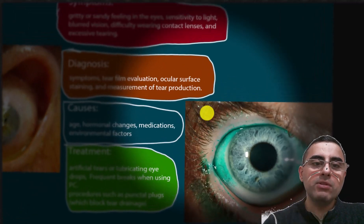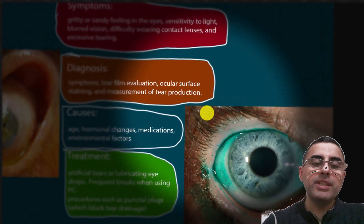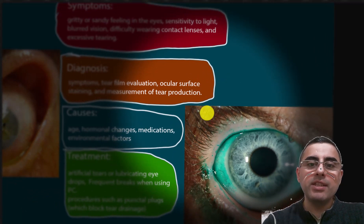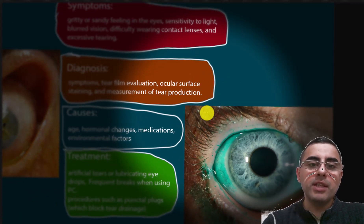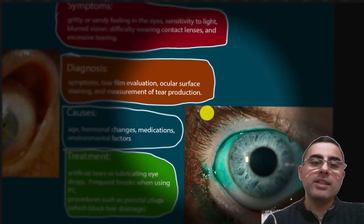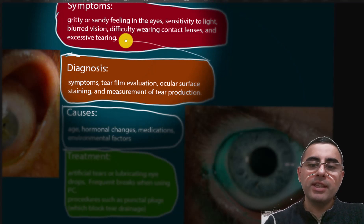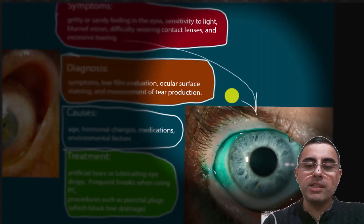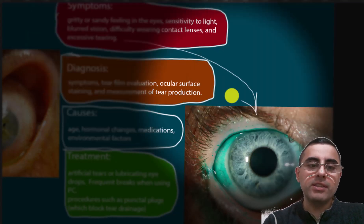Symptoms include a gritty or sandy feeling in the eyes, sensitivity to light, blurred vision, difficulty wearing contact lenses, and excessive tearing. Excessive tearing can be a compensatory mechanism of dry eye syndrome.